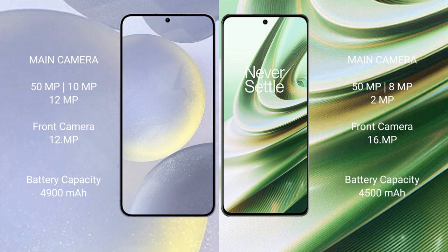The Samsung Galaxy S24 Plus features a triple rear camera setup: 50MP plus 10MP plus 12MP, and a 12MP front camera. The OnePlus 10R features a triple rear camera setup: 50MP plus 8MP plus 2MP, and a 16MP front camera.